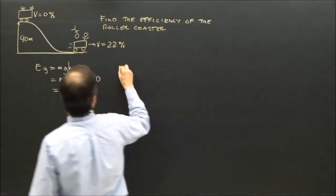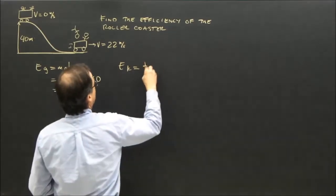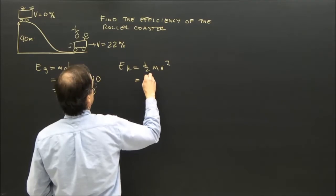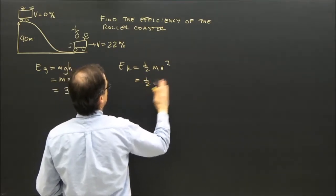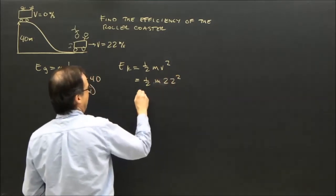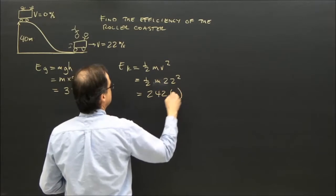Now I've got to figure out the kinetic energy that turned into. It's 1/2 mv squared, which is 1/2 m times 22 squared. So that ends up being 242 times the mass.